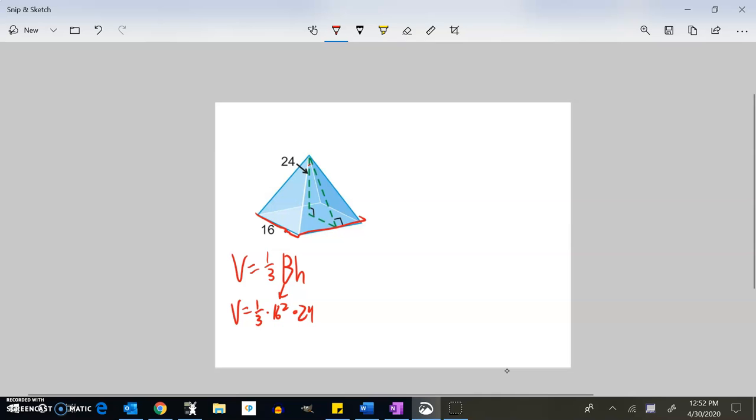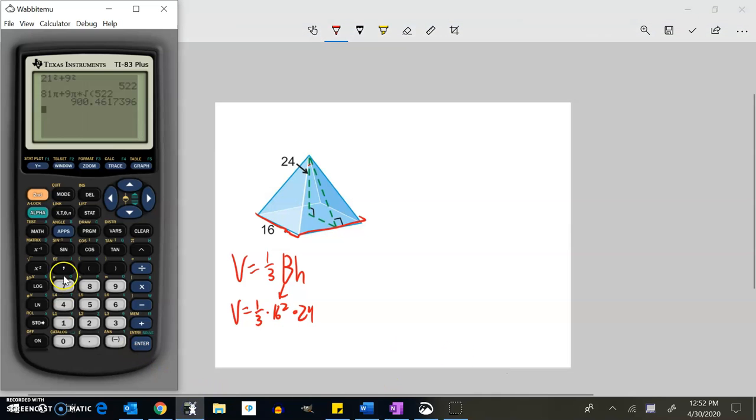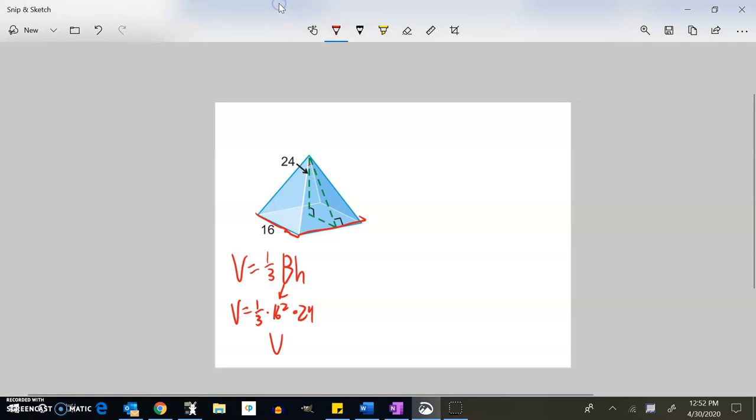Let me do that on my calculator: one-third times 16 squared times 24, and I get 2048. So my volume is 2048 cubic units. Now to find the surface area, I'm going to think about cutting each side and then folding it out, so I have this base that's a square and then these sides fold out as triangles.